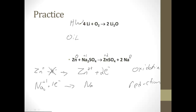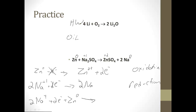There are two electrons in the zinc reaction and one electron in the sodium reaction, so I need to multiply the sodium equation by two to balance the electrons: 2Na⁺ + 2e⁻ → 2Na. Now I can add them back together: 2Na⁺ + 2e⁻ + Zn → 2Na + Zn²⁺ + 2e⁻. The electrons cancel, and I have two sodiums on each side and one zinc on each side — balanced.